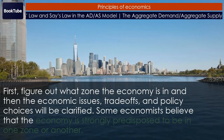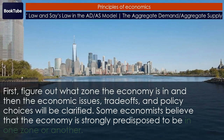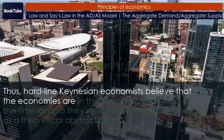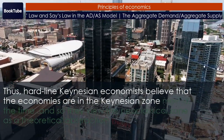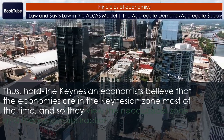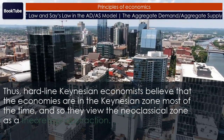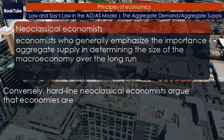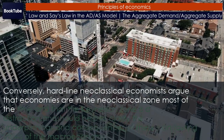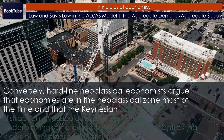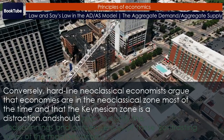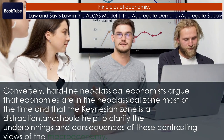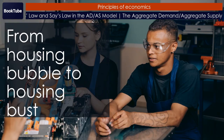Some economists believe that the economy is strongly predisposed to be in one zone or another. Hardline Keynesian economists believe that economies are in the Keynesian Zone most of the time, and so they view the Neoclassical Zone as a theoretical abstraction. Conversely, hardline neoclassical economists argue that economies are in the Neoclassical Zone most of the time and that the Keynesian Zone is a distraction.